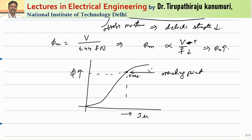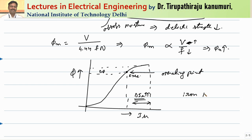When voltage increases or frequency decreases, the required flux increases. Even a small change in flux above the knee point causes a very large change in the magnetizing component — a huge magnetizing current is drawn from the supply, placing a heavy burden on the system. The iron losses, including hysteresis and eddy current losses, also increase due to increased voltage or decreased frequency. This phenomenon is called over-fluxing.